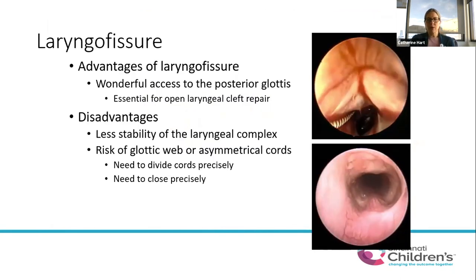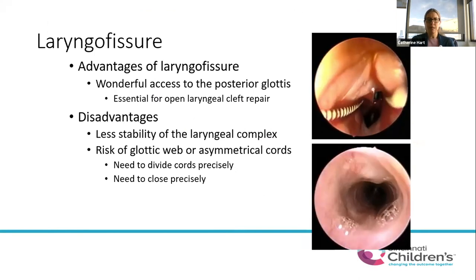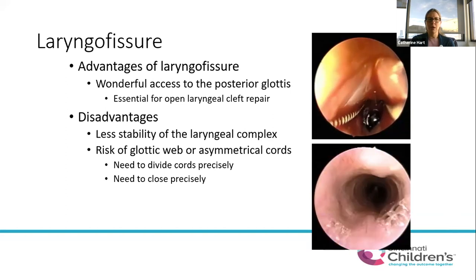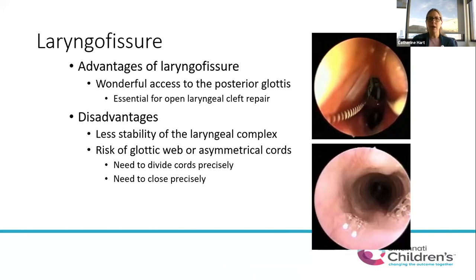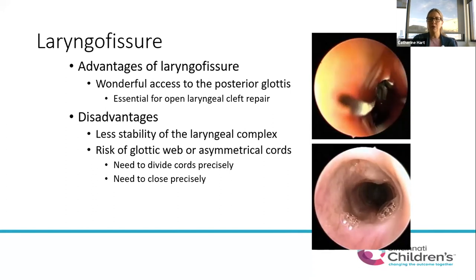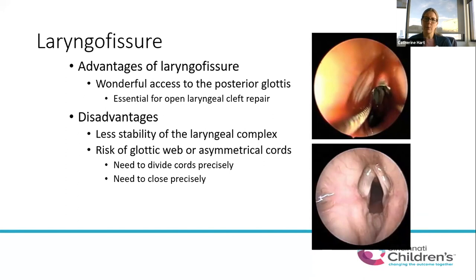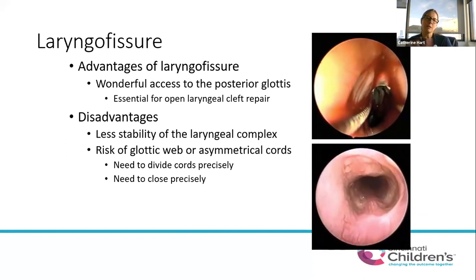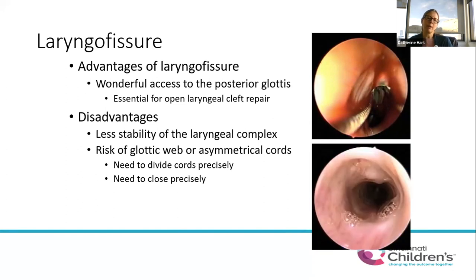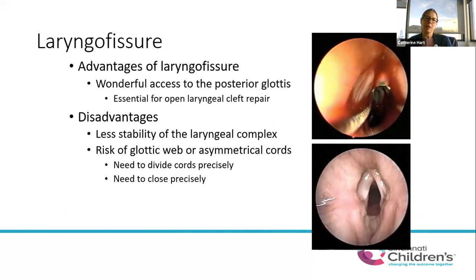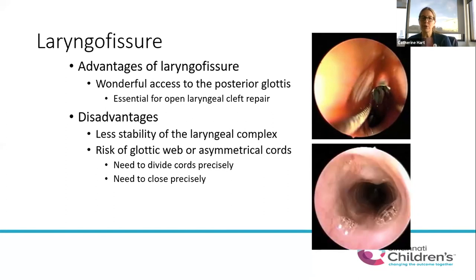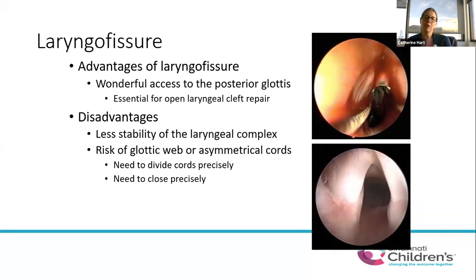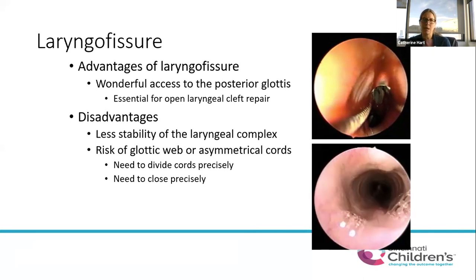We almost always used to do a complete laryngofissure for posterior grafts. This must be done very cautiously with endoscopic guidance to avoid injury to the vocal cords and to divide the commissure exactly in the midline. If not done properly, you can end up with a web where the anterior commissure overlaps. A laryngofissure gives great access to the posterior glottis and makes placing the graft easier, but if you can get away without it, that's the ideal approach.